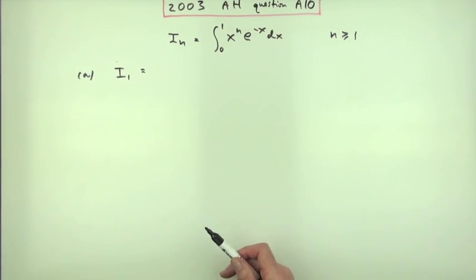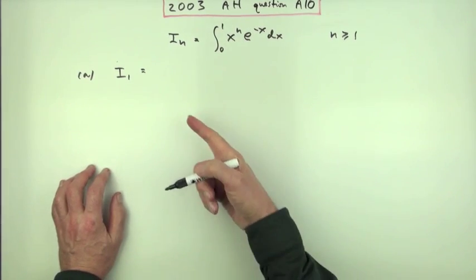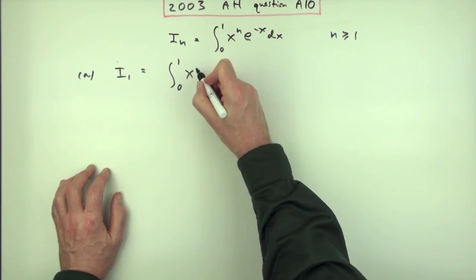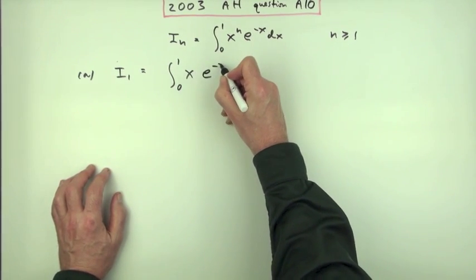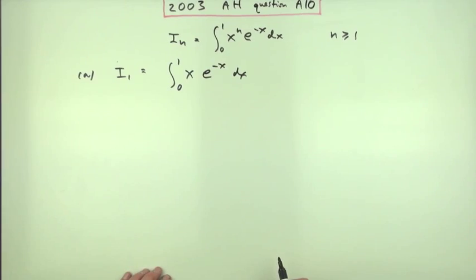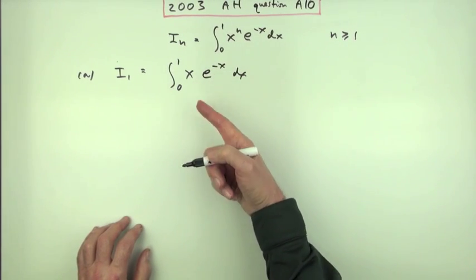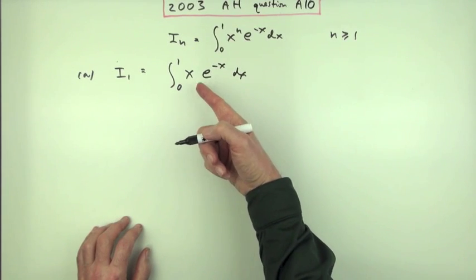So that's why it's starting off with saying, well, what's the value of i₁? Well, when n is 1, that will be the integral from 0 to 1 of just x to the power 1, e to the negative x dx. So an obvious candidate for, because that isn't the derivative of that, an obvious candidate for integration by parts.